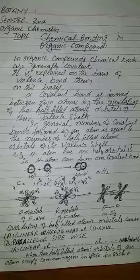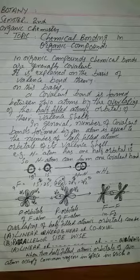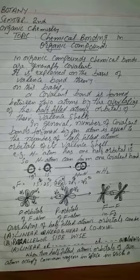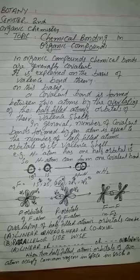If an atom has one half-filled atomic orbital, it will form one bond. If an atom has two half-filled atomic orbitals, it will form two covalent bonds, and if an atom has three, and so on.